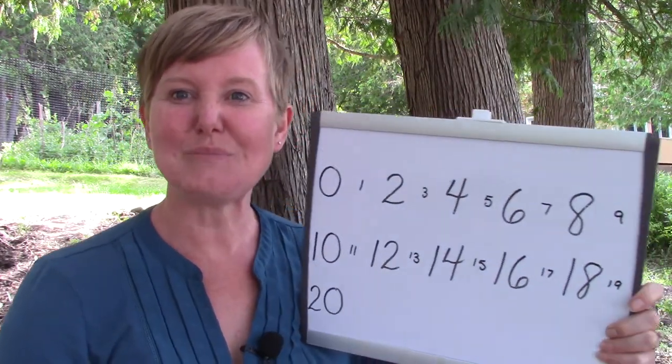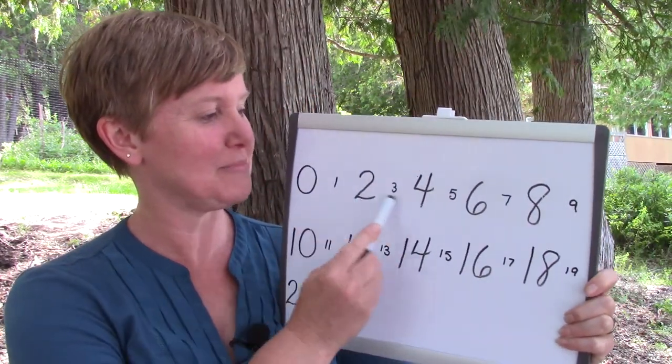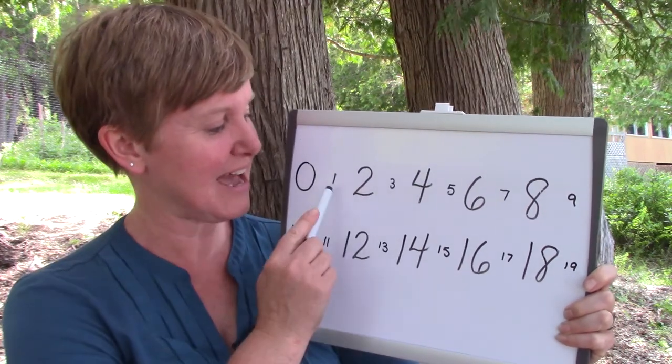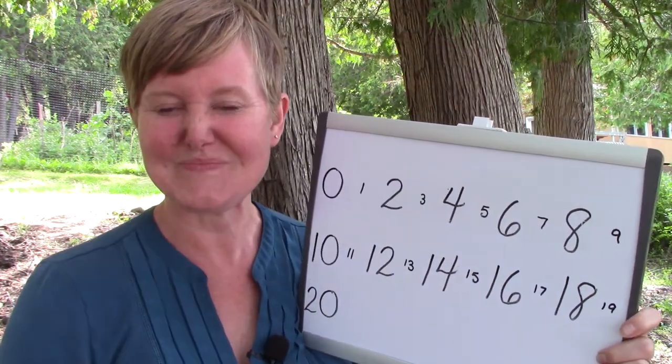We also had another learning goal today and our learning goal was to know the difference between an even number, those are the big ones that I wrote down, and our odd numbers. I know that you're going to remember that an even number always has pairs or buddies and an odd number always has one that's a little left out. I hope that you have a wonderful day practicing and counting your even numbers and your odd numbers today. Have a great day class. Bye-bye.